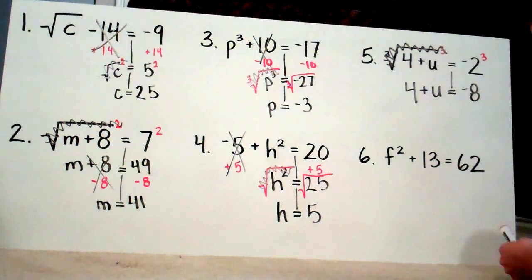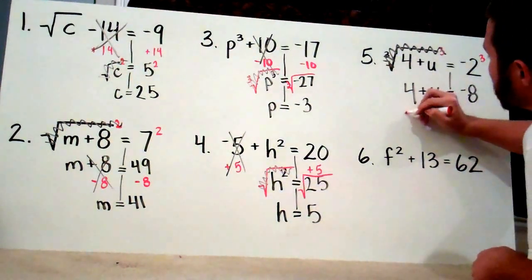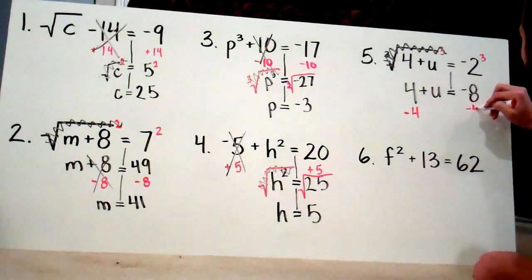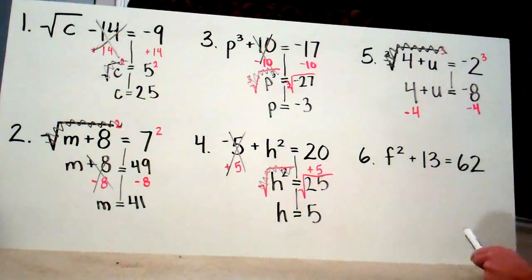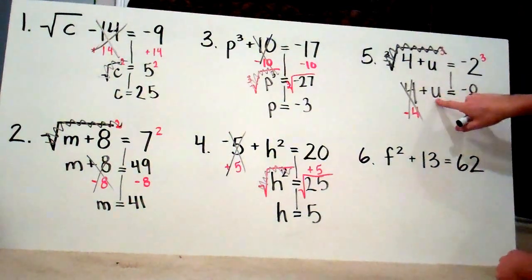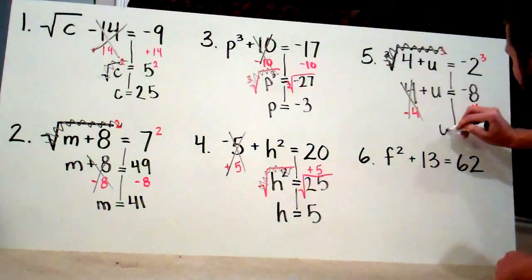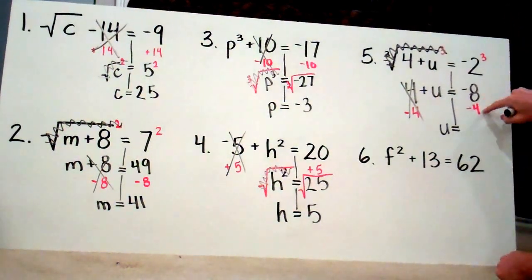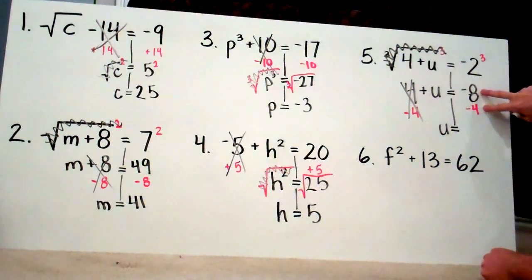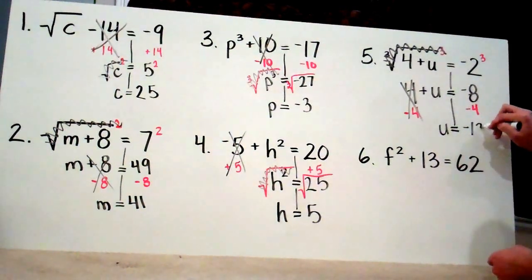Last step: I've got to get rid of that positive 4. The inverse is minus 4, so I do that on both sides. These cancel out, leaving just u. Negative 8 minus 4: same sign, sum — add them up — we get negative 12.